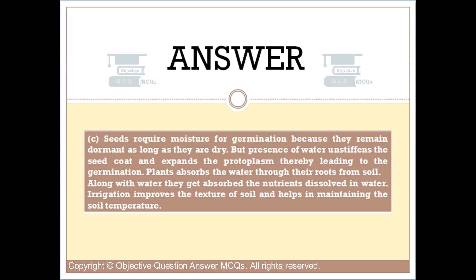Seeds require moisture for germination because they remain dormant as long as they are dry, but the presence of water unstiffens the seed coat and expands the protoplasm, thereby leading to germination. Plants absorb water through their roots from soil, and along with water they absorb the nutrients dissolved in it. Irrigation also improves the texture of soil and helps in maintaining soil temperature and moisture.